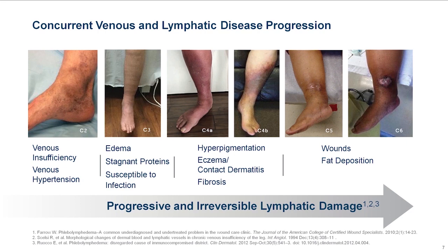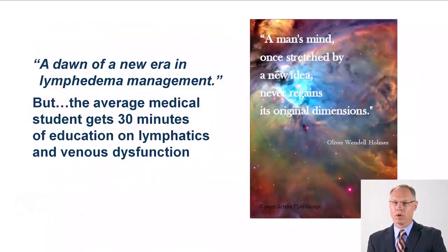Flebolymphedema begins at C3 status and has now been definitively demonstrated by near-infrared imaging to exist with lymphatic dysfunction in late stages of C3, C4, C5, and C6. This represents a new dawn in the era of lymphedema management, and it's important to recognize that lymphedema is closely linked with advanced venous disease. Yet the average medical student still only receives 30 minutes of education on lymphatics and venous dysfunction.